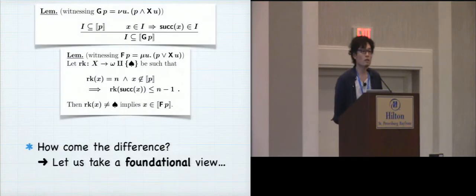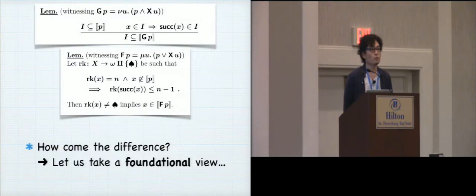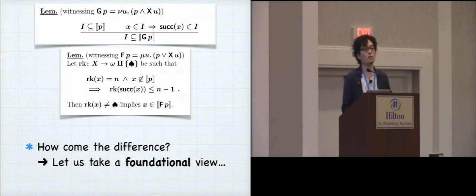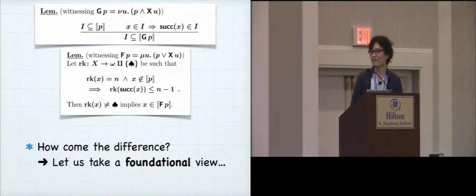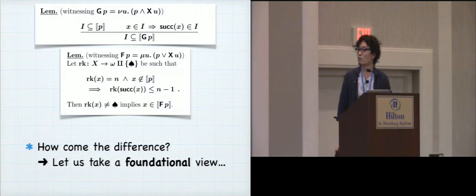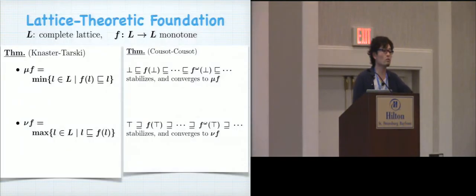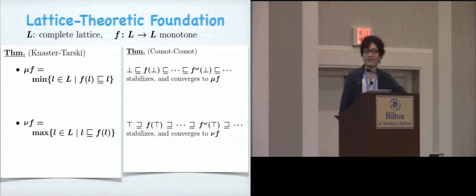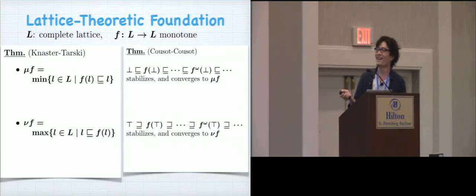Okay, the question now is, so these two proof techniques, although the goals, greatest and least fixed points, they are dual to each other, they come in quite different flavors. And the question is, how comes this difference? How come they look so different from each other? And it's nice to take at this moment a foundational view.